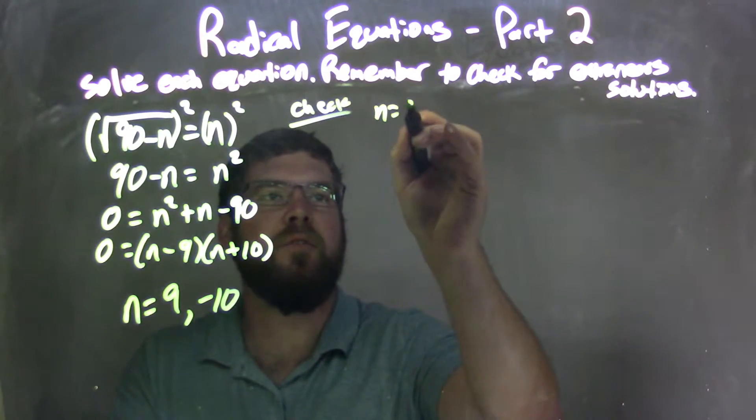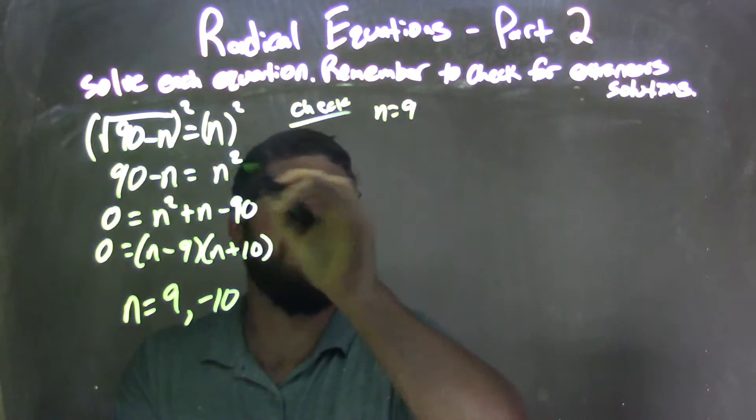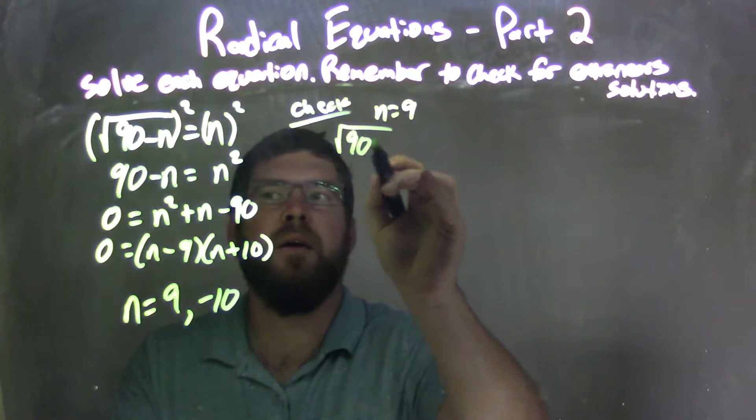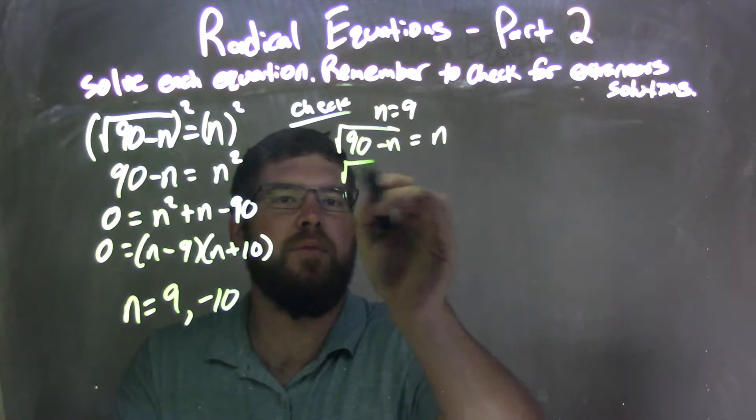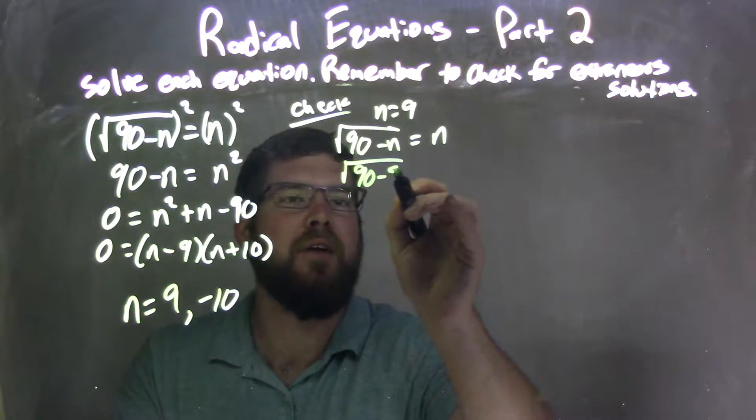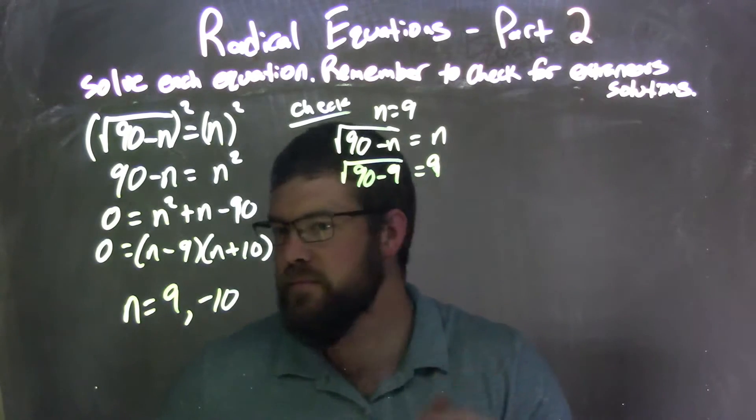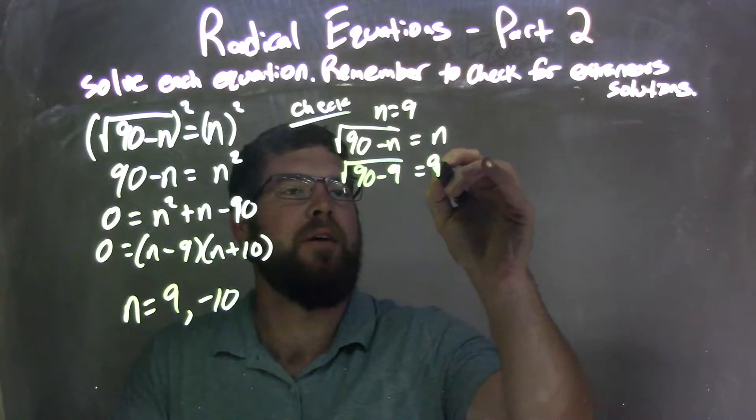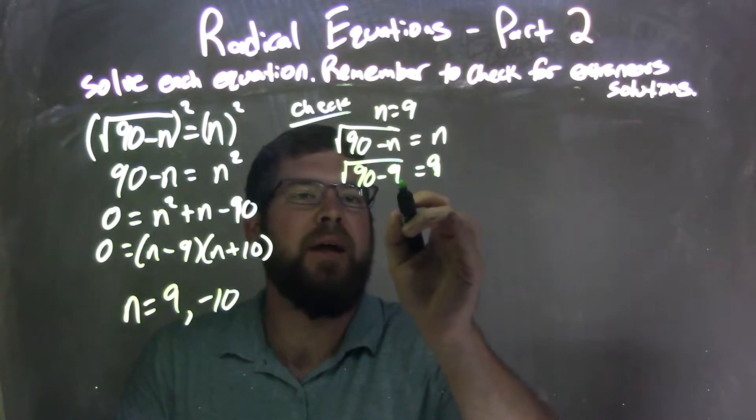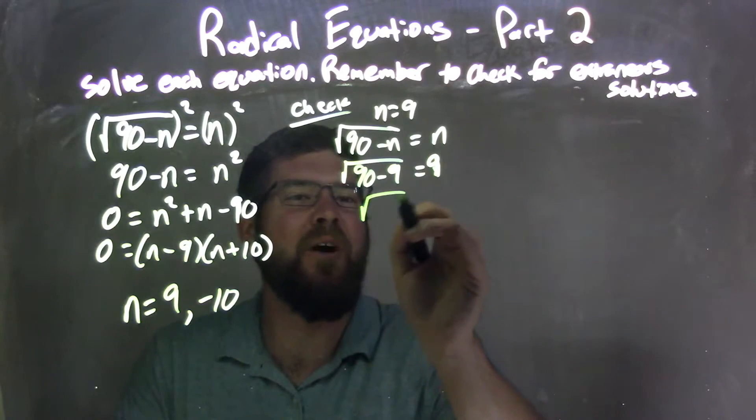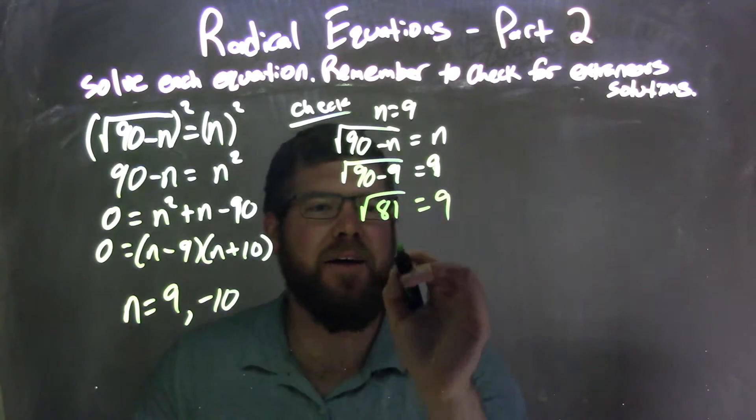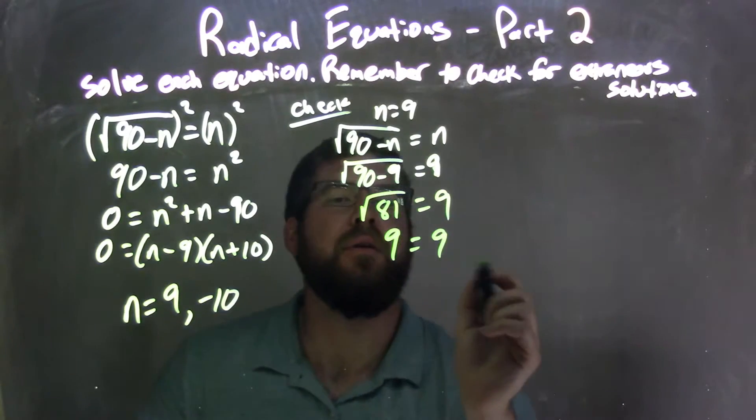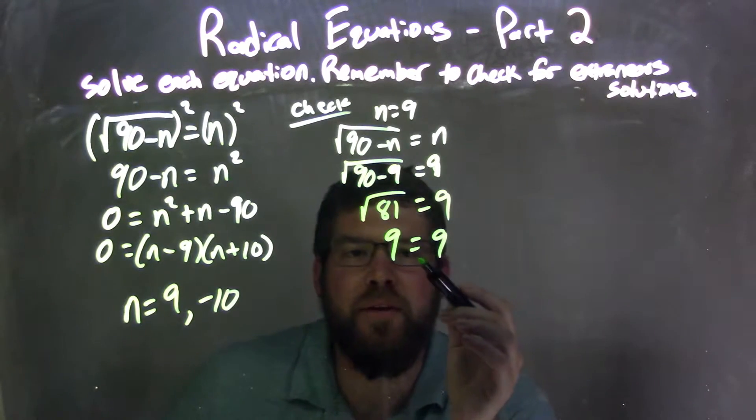I'm going to take my n equals 9 first. And let's plug it into the original equation. So we have 90 minus n equals n. 9 goes in for n. So we have square root of 90 minus 9 equals 9. So 90 minus 9 is 81 equals 9. Square root of 81 is just 9. 9 equals 9.